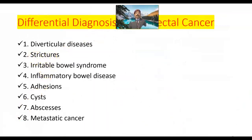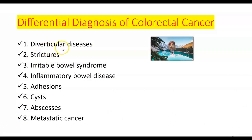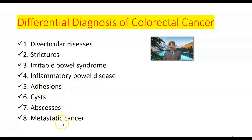Differential diagnosis: colorectal cancer can be confused with other diseases such as diverticular disease — which also occurs in the large intestine — strictures, irritable bowel syndrome, inflammatory bowel disease including Crohn's disease and ulcerative colitis, adhesions, cysts, abscesses, and metastatic cancer.